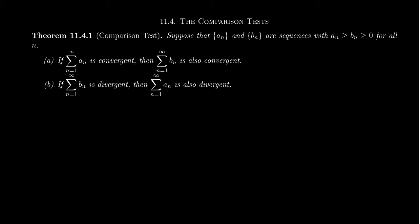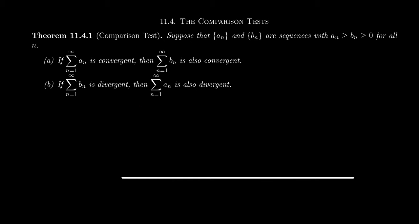We have two sequences in question: a sub n and b sub n. We're going to assume that a is bigger than b and they both need to be positive — both above the x-axis, always greater than or equal to zero. So if we have our x-axis and the first sequence converges toward zero, the second sequence is smaller in each instance — yellow is bigger than blue in every instance.